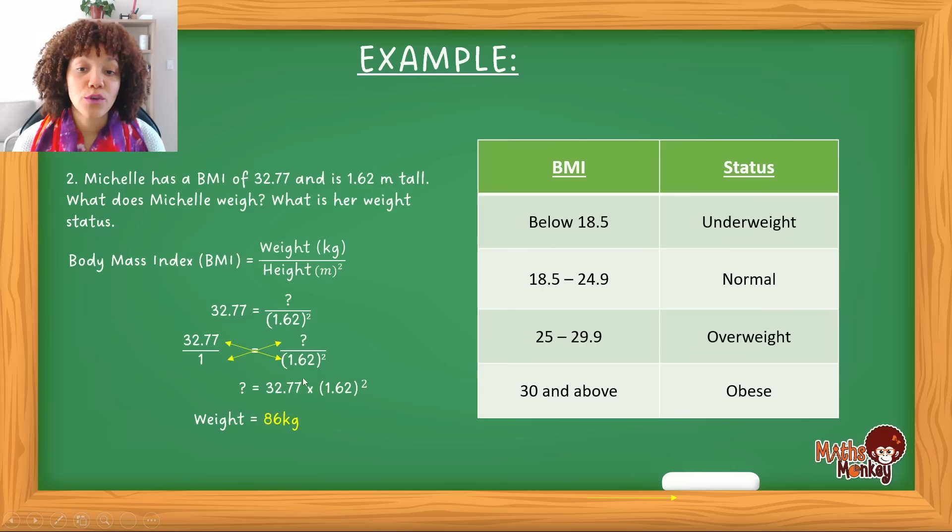Now again, this we could have actually told even from not doing the calculation because the weight status is based on the BMI. And the BMI is given to you in this question, which is 32.77. So that means here that this person, Michelle, is obese.